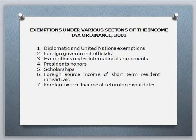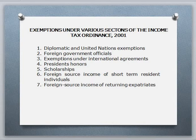Number one is Diplomatic and United Nations exemptions. The amount of income of an individual entitled to privileges under the diplomatic convention shall be exempt from tax under this ordinance to the extent provided. Similarly, the amount of income of an individual entitled to privileges under the United Nations shall be exempt from tax under this ordinance to the extent provided.